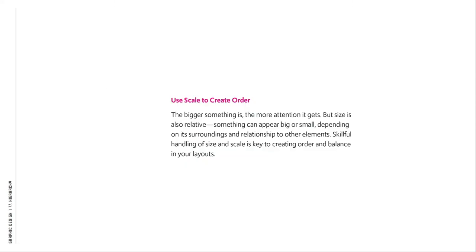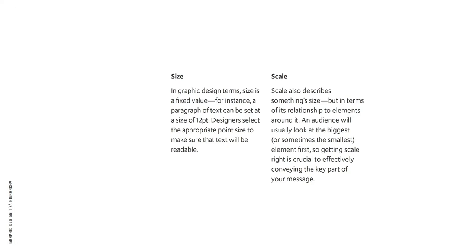You can use scale to create order. The bigger something is, the more attention it gets — but size is also relative: something can appear big or small depending on its surroundings and relationship to other elements. Skillful handling of size and scale is key to creating order and balance in your layouts. In graphic terms, size is a fixed value — for instance, a paragraph of text set at 12 point. Scale describes something's size in terms of its relationship to elements around it. An audience will usually look at the biggest — or sometimes the smallest — element first, so getting scale right is crucial.